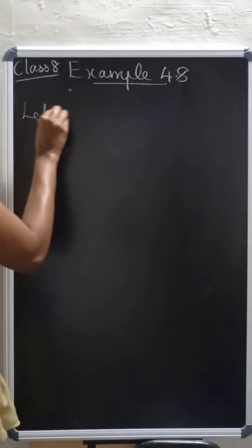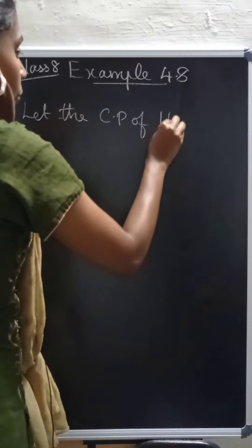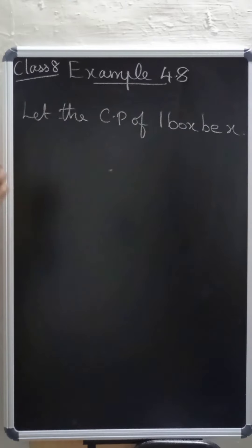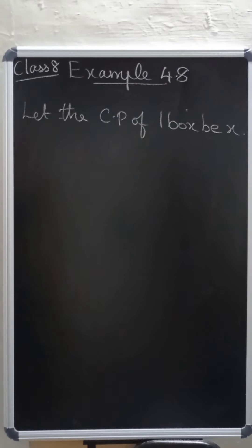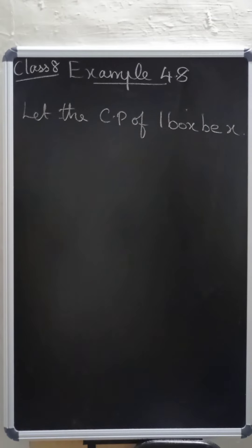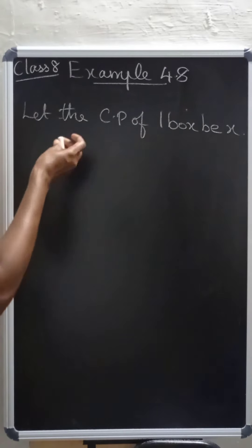We need to identify which is the lesser number: 16 boxes or 20 boxes. We are going to let the cost price of 1 box be x. So the selling price of 1 box is also represented using x. The hint here is to work with the lesser number of boxes, which is 16.